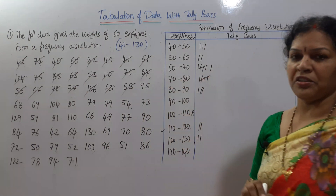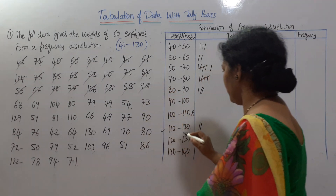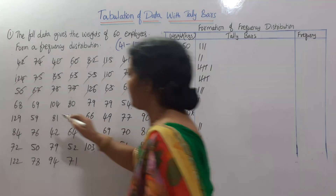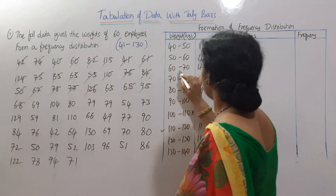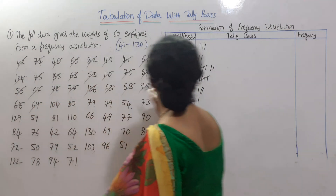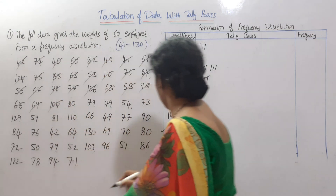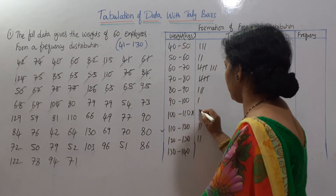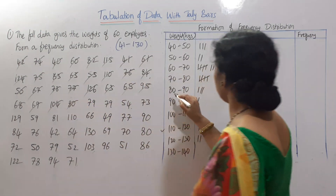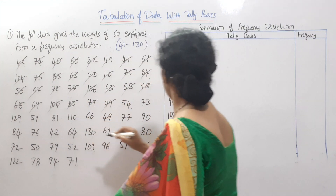Next: 95 falls in 90 to 100. 68 falls in 60 to 70. 69 falls in 60 to 70. 104 falls in 100 to 110. 80 falls in 80 to 90. 79 falls in 70 to 80.